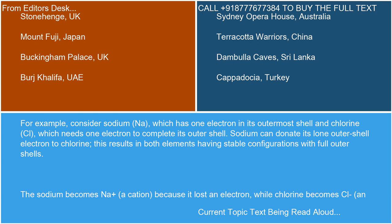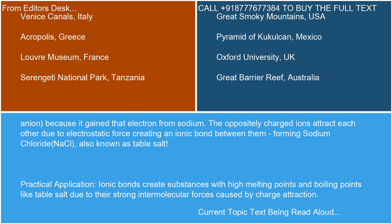For example, consider sodium (Na), which has one electron in its outermost shell, and chlorine (Cl), which needs one electron to complete its outer shell. Sodium can donate its lone outer shell electron to chlorine, resulting in both elements having stable configurations with full outer shells. Sodium becomes Na+, a cation, because it lost an electron, while chlorine becomes Cl-, an anion, because it gained that electron from sodium. The oppositely charged ions attract each other due to electrostatic force, creating an ionic bond between them, forming sodium chloride (NaCl), also known as table salt.